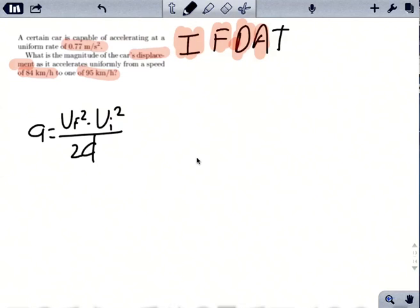Now, the other thing that we should notice is the unit of our velocity. This is in kilometers per hour and we need it in meters per second because our acceleration is in meters per second squared, and our answer wants to be in meters.